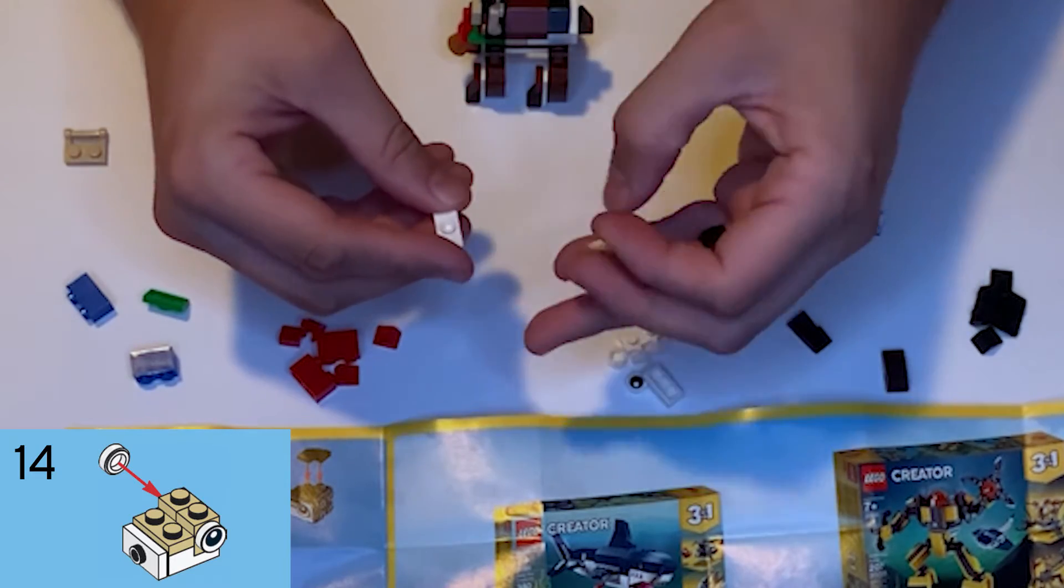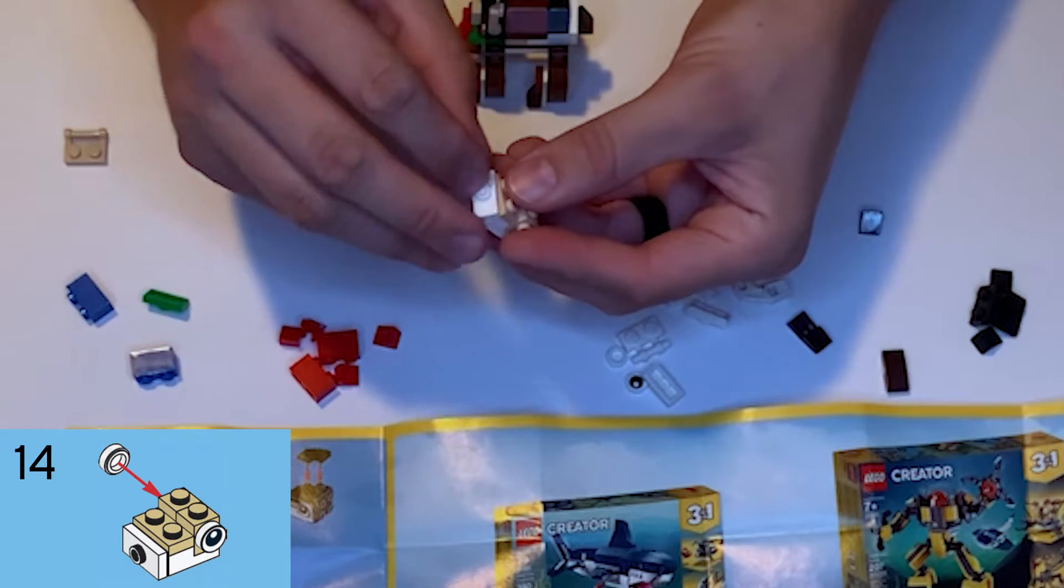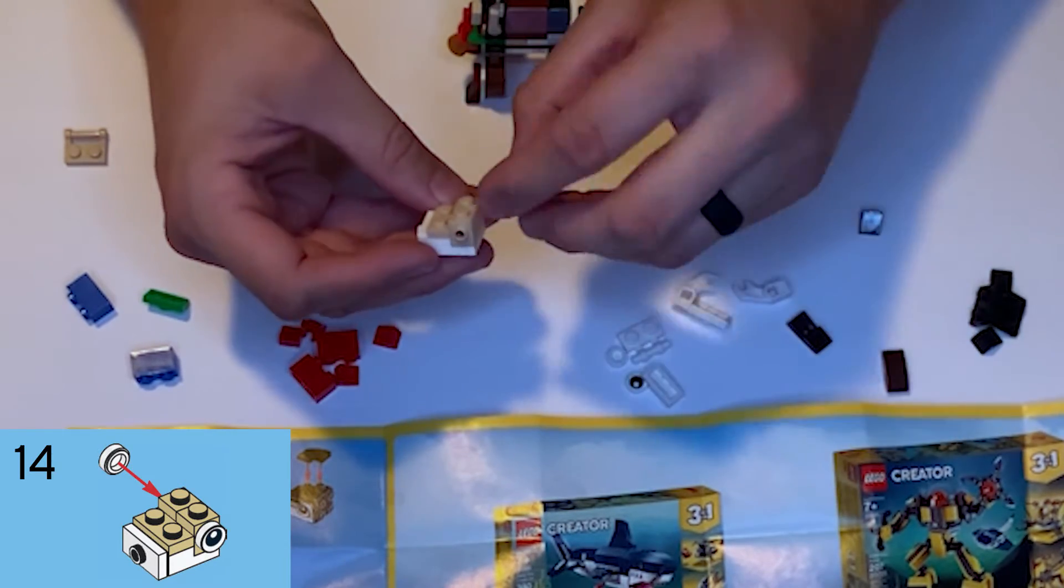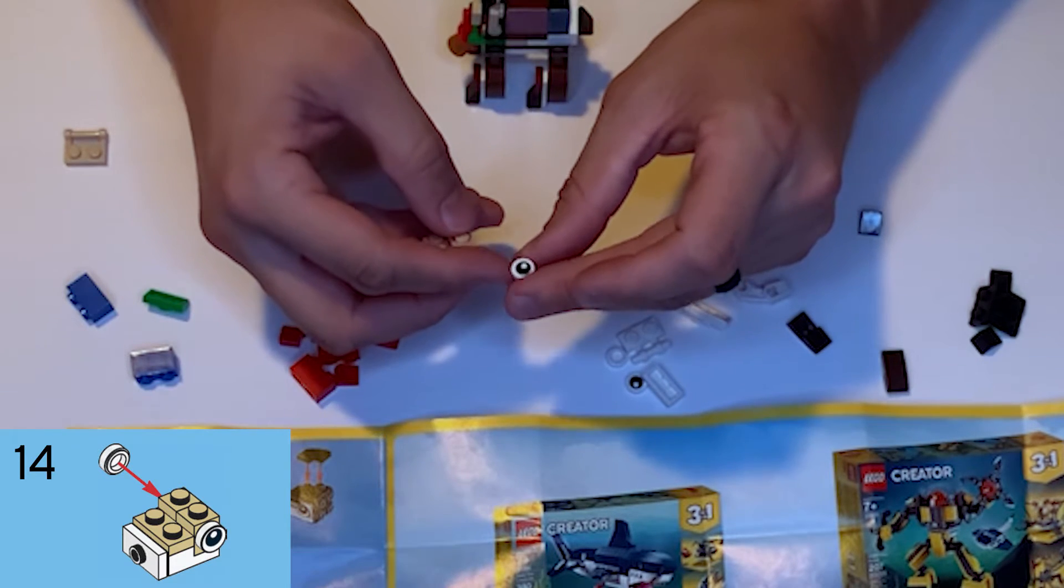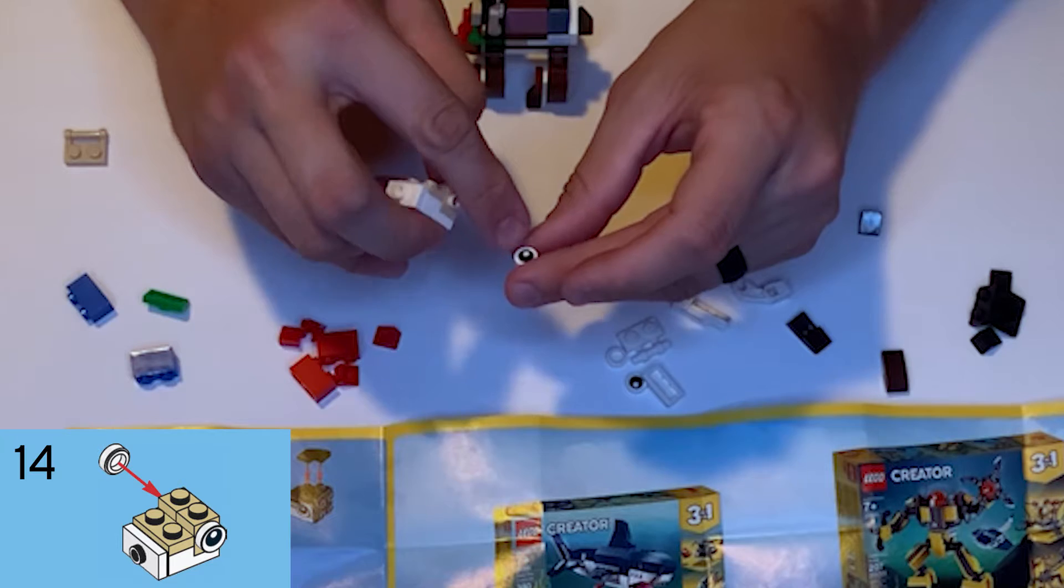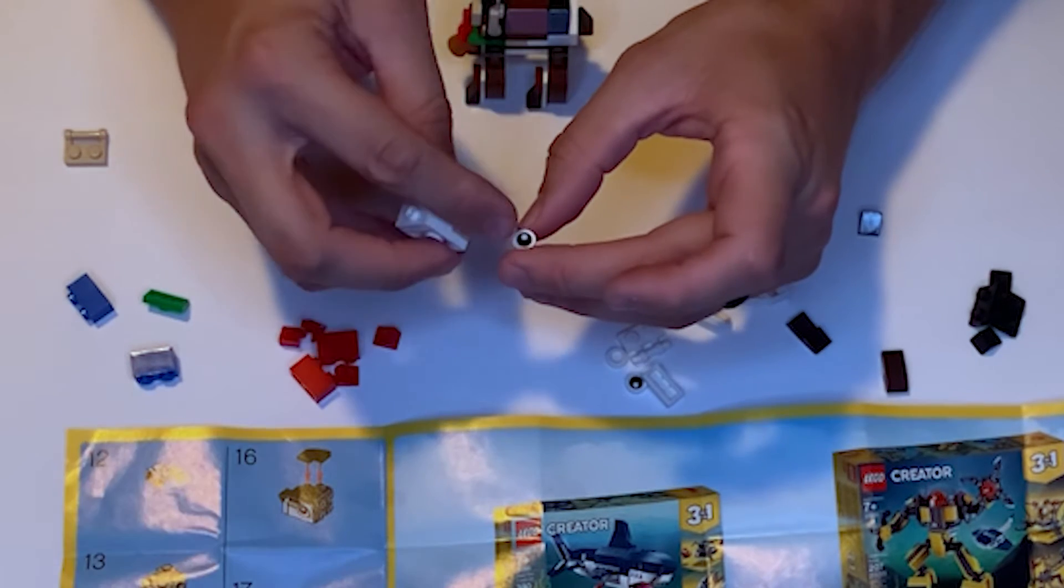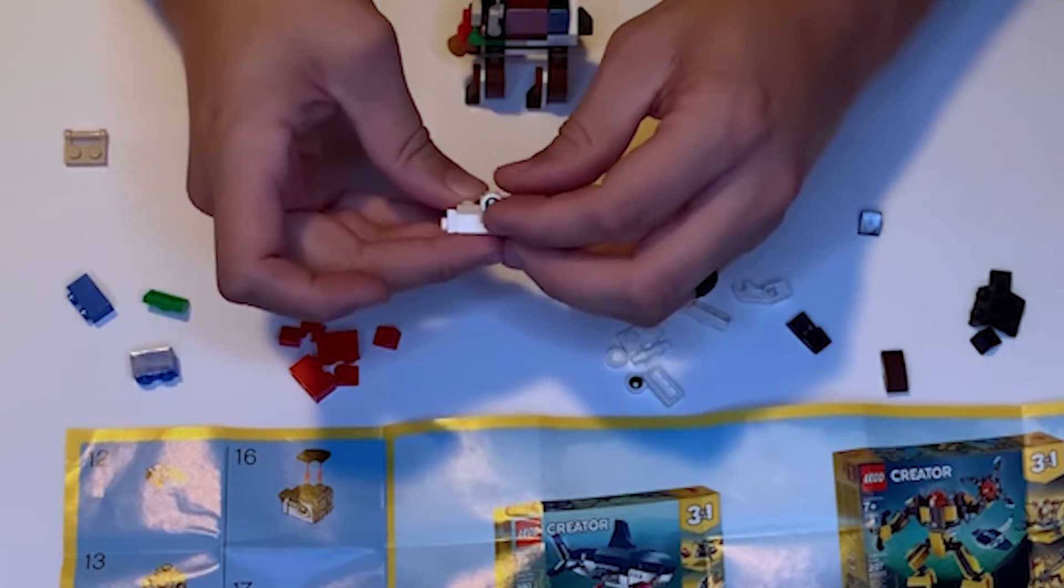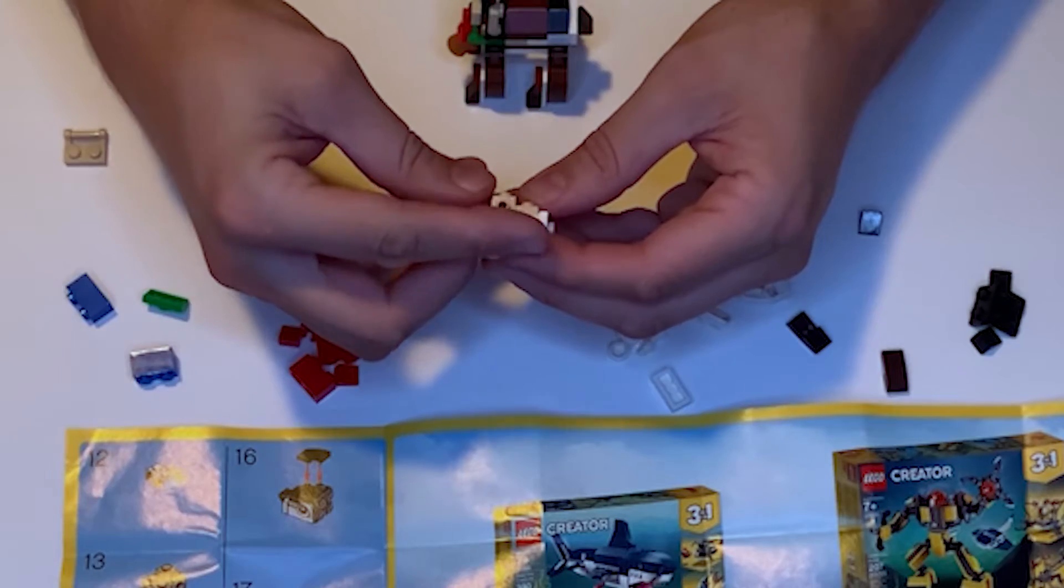We're gonna put that on the front of these white side-facing studs, and then we need the eyes. The eyes are gonna go into these tan side-facing studs. Now if you look at the eye, this black circle is a little bit offset and the white circle is offset as like a little reflection in the eye. That white small circle in the middle is gonna point upwards on both sides, the same thing.